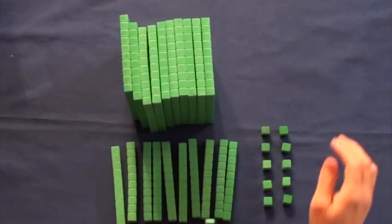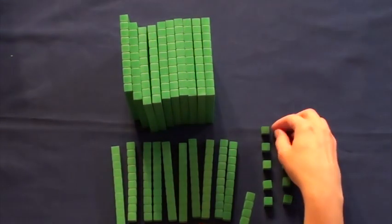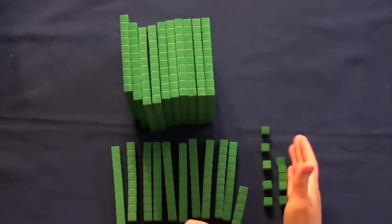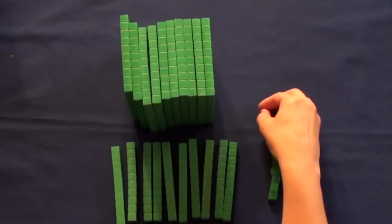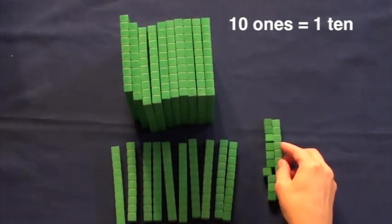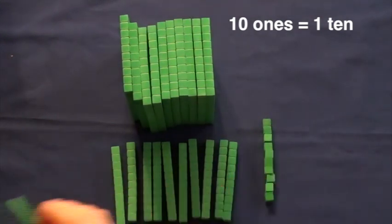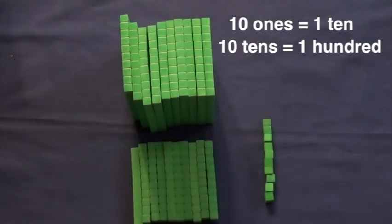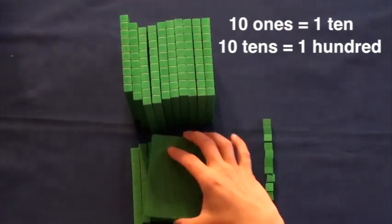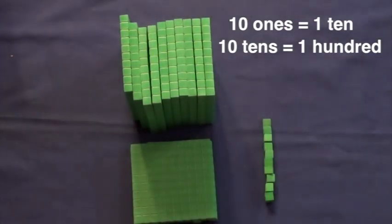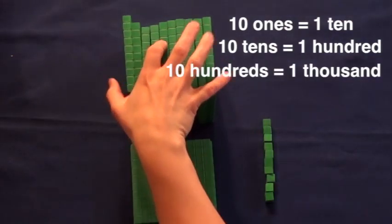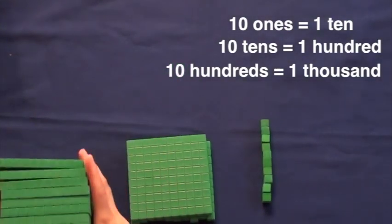Like many countries, we have a base ten system, which means that we base our numbers off of groups of ten. Ten ones equals one ten. Ten tens equals one hundred. We group numbers this way so that it is easier to count and write numbers.